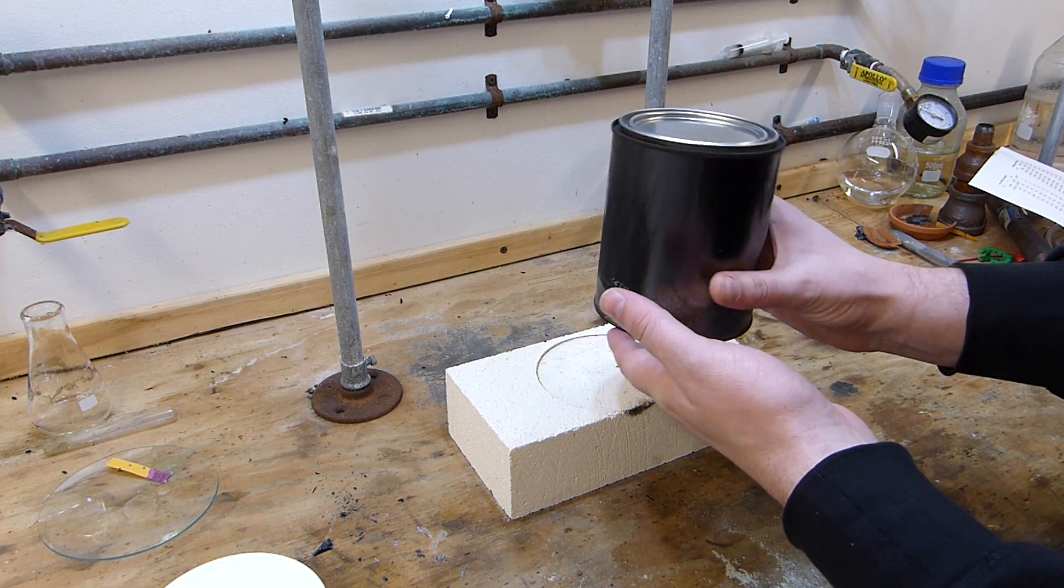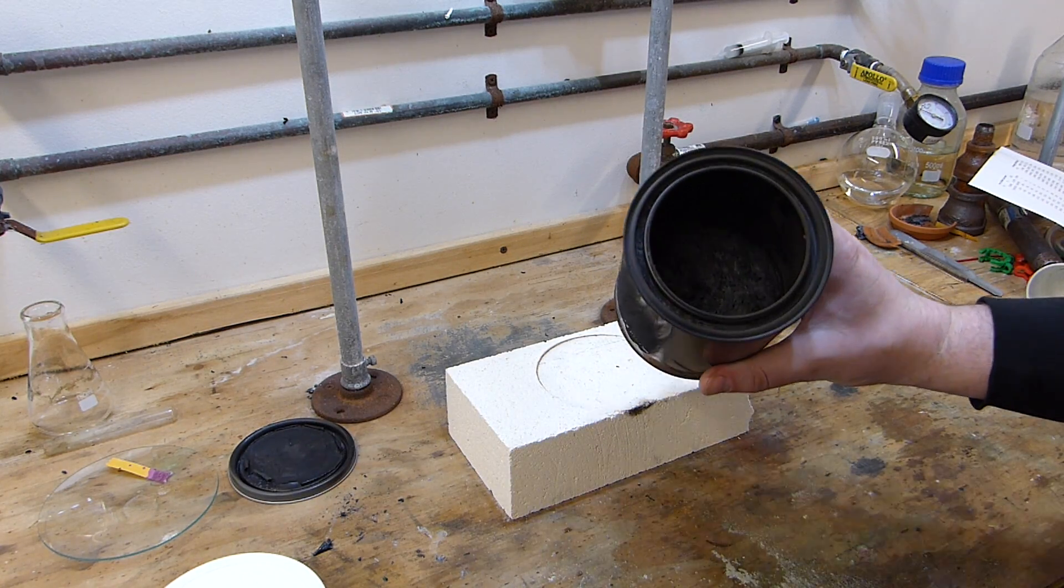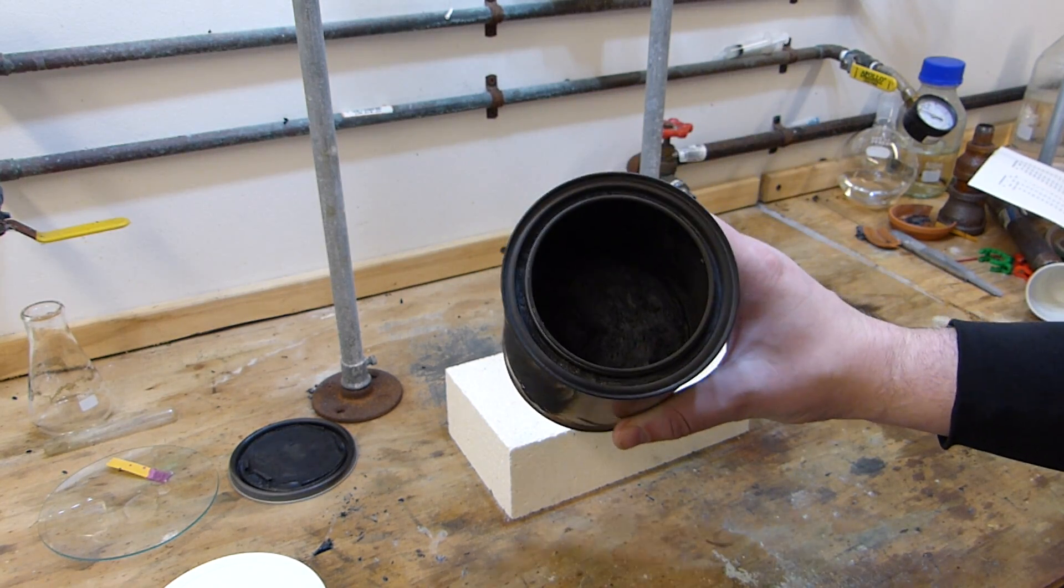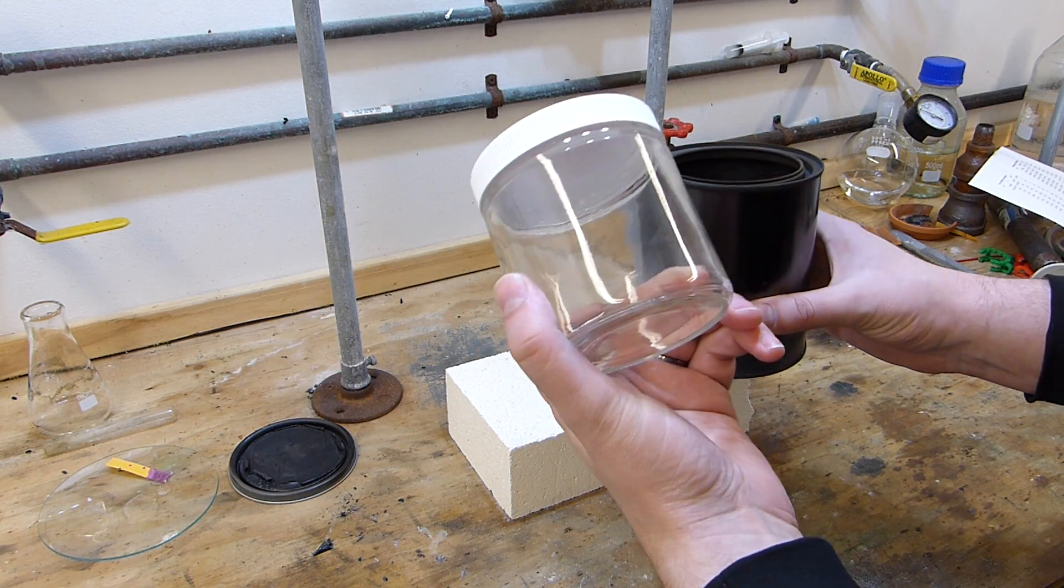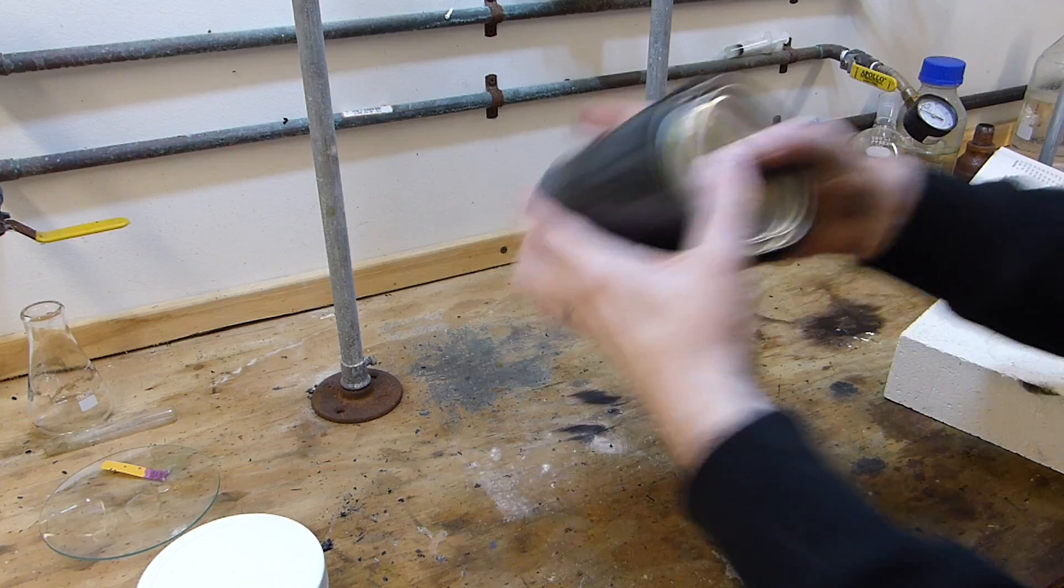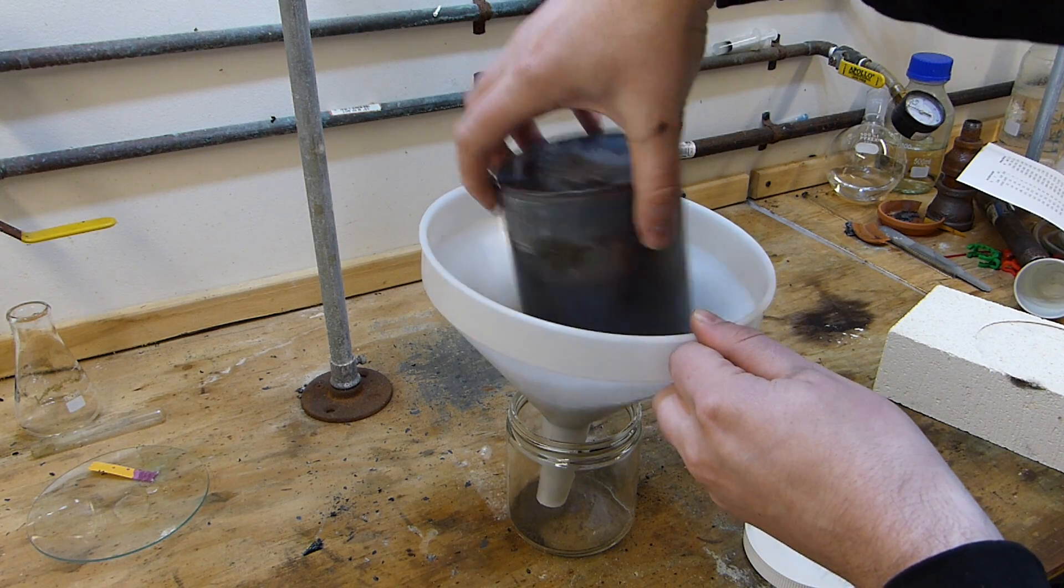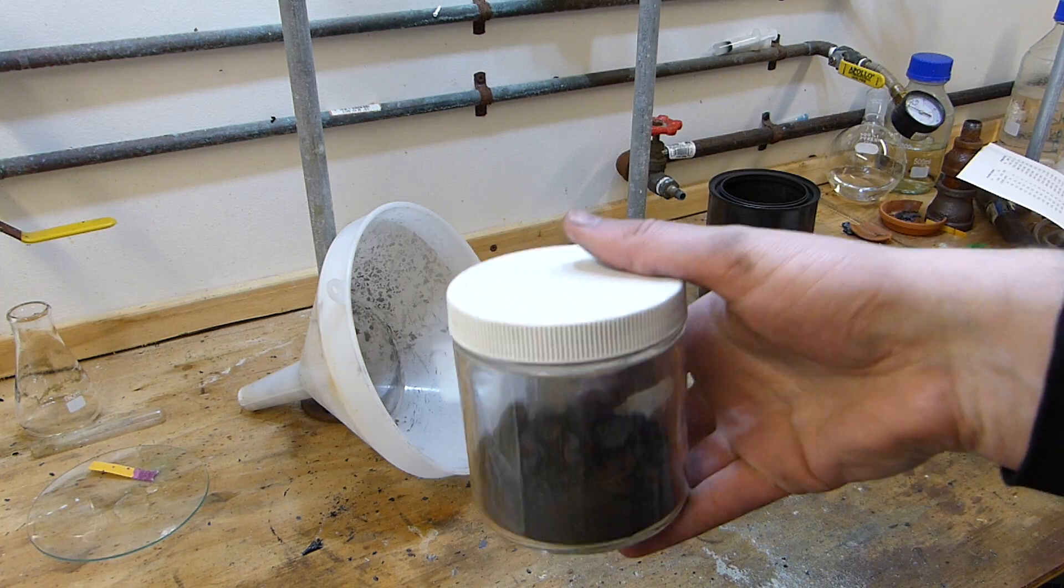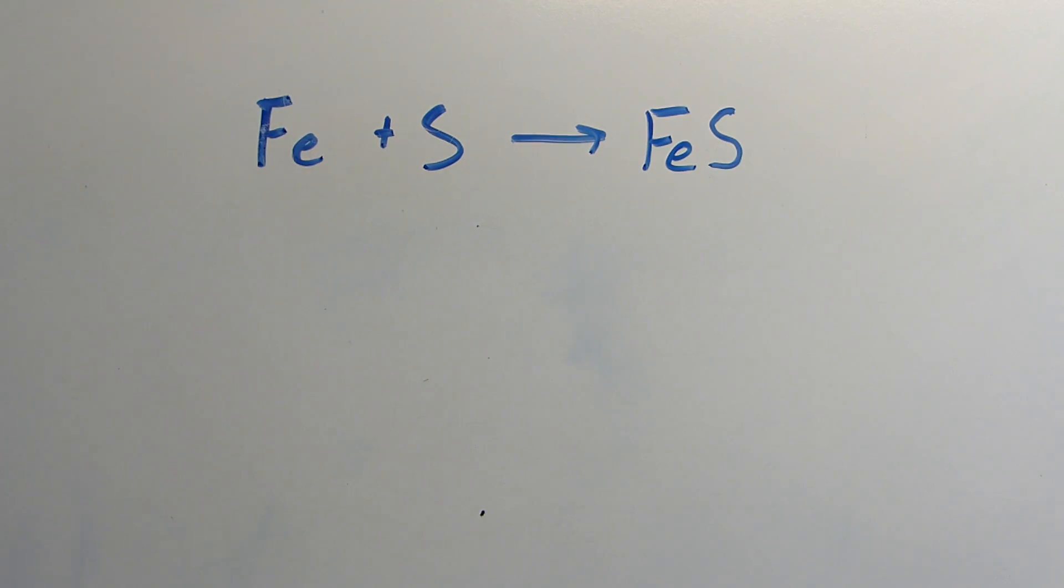Alright, so the can has now cooled almost completely. It's still just barely warm on the bottom, but certainly cool enough to touch. When I open it up, you can see inside, there's just a hard crust of iron sulfide that's pretty much a giant brick. So what I'm going to do is put the lid back on and shake the crap out of it again to pulverize it up and then store it in a jar. That's basically it. So there's our iron sulfide. I'll go ahead and label this.